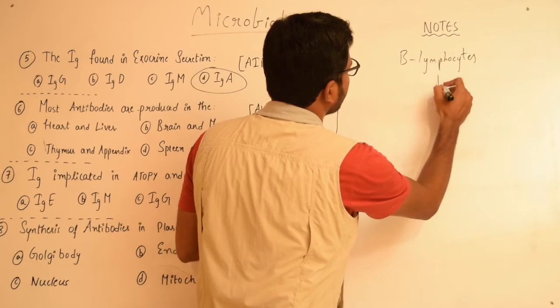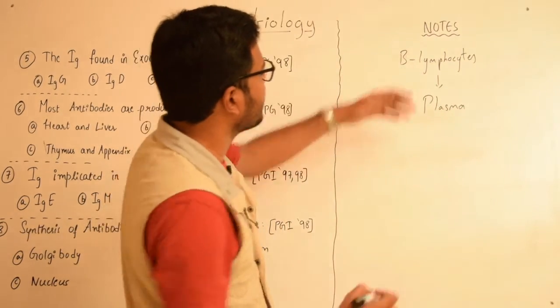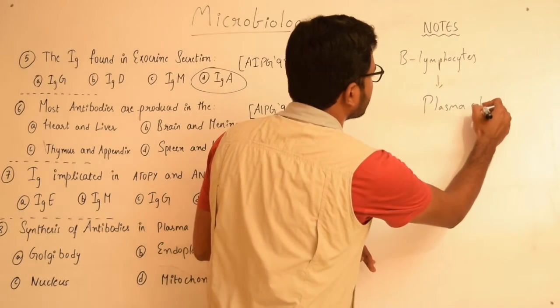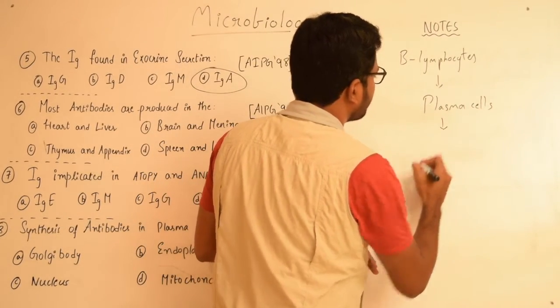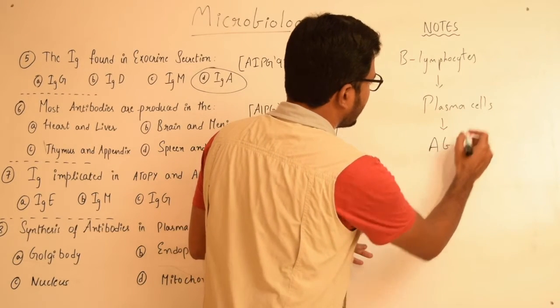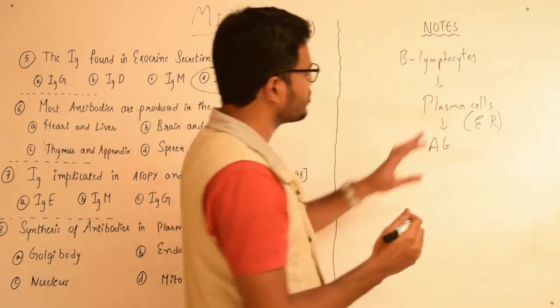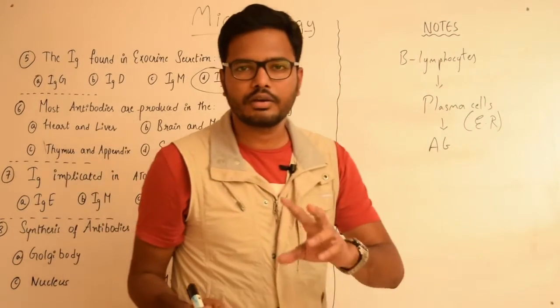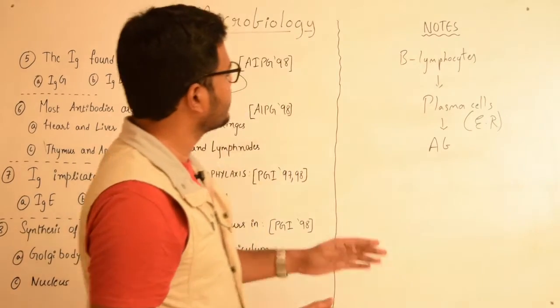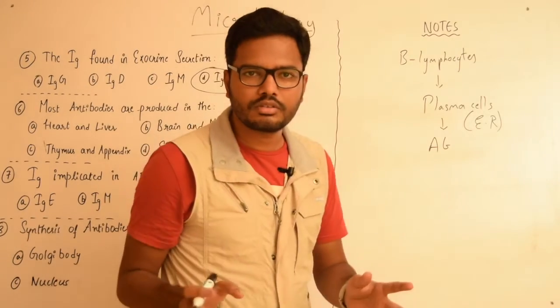...which give rise to plasma cells. In other words, plasma cells are differentiated from B lymphocytes, and these plasma cells produce antibodies. Within these plasma cells, endoplasmic reticulum is the organelle where the synthesis of antibodies occurs. This is the lineage where B lymphocytes differentiate into plasma cells, and most of the antibodies are produced by plasma cells.